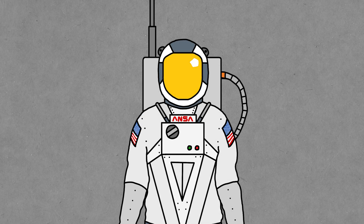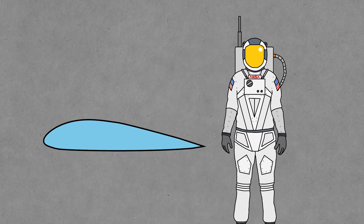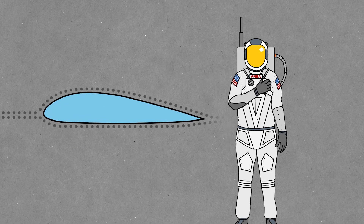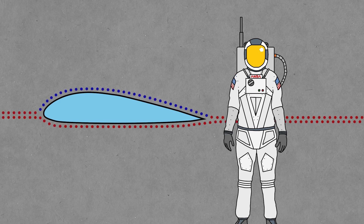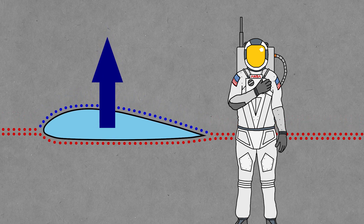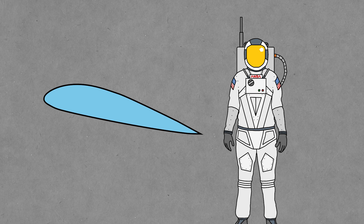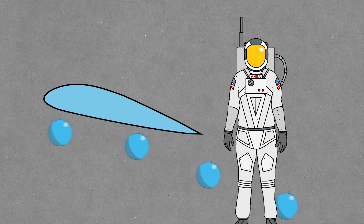There are generally two explanations of lift floating around. The older one, that's thankfully falling out of favor, is that the top of the airfoil is longer, so air must flow over it more quickly, and faster air has a lower pressure, so this essentially sucks the wing up. There are some big problems with this explanation. The second explanation, which is gaining popularity, is that the flow is deflected down by the wing, and every action has an equal and opposite reaction, so this pushes it back up.